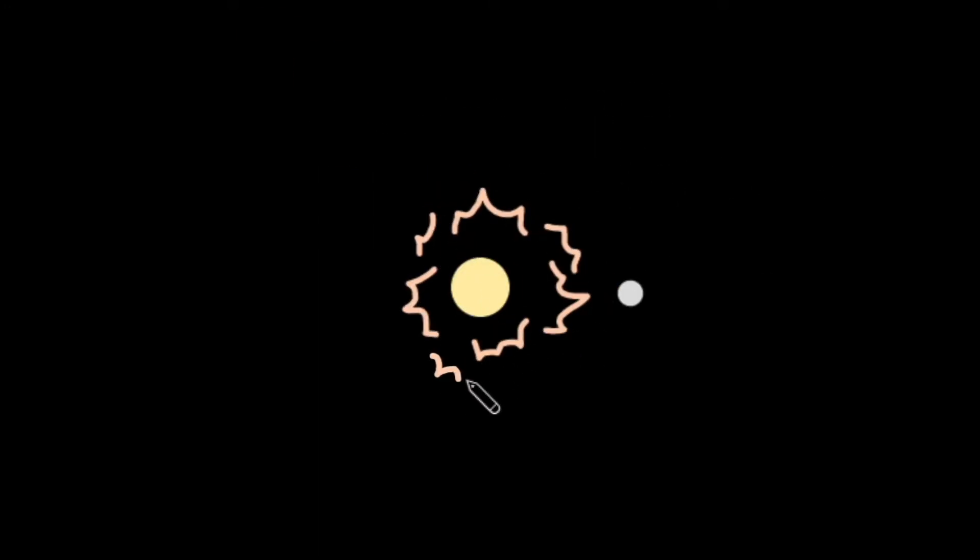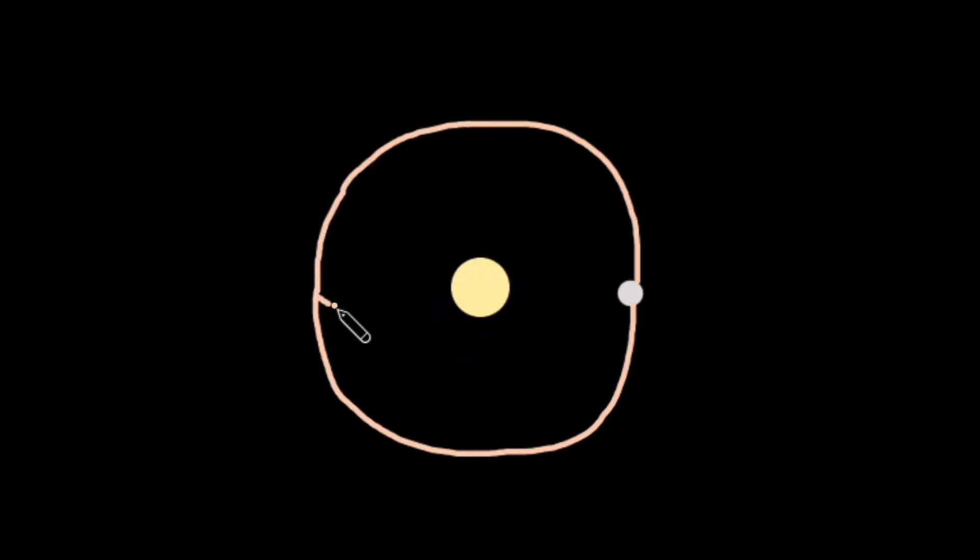Flux is the amount of power that passes through a given area. The flux experienced from a random point in space, then, is just the fraction of the luminosity that hits it, which would be equivalent to the luminosity divided by the surface area of a sphere that radiates out to the distance of that point in space.